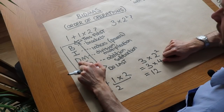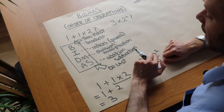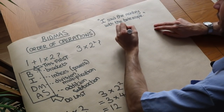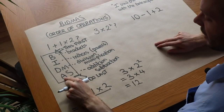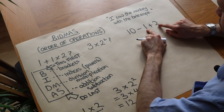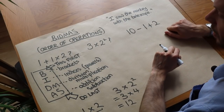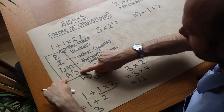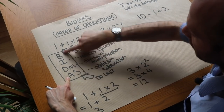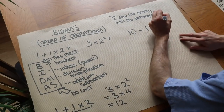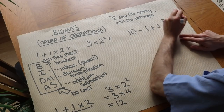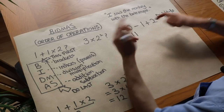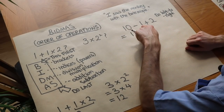You might be wondering why division and multiplication are on the same line, and why addition and subtraction are on the same line. The reason is that one doesn't have priority over the other. For example, if I wrote 10 minus 1 plus 2, some people might think addition comes before subtraction and do 1 plus 2 first to get 3, then 10 minus 3 equals 7. But that is wrong. When operations are on the same level in BIDMAS, we simply go left to right. So we do 10 minus 1 first, which is 9, then add 2 to get 11.